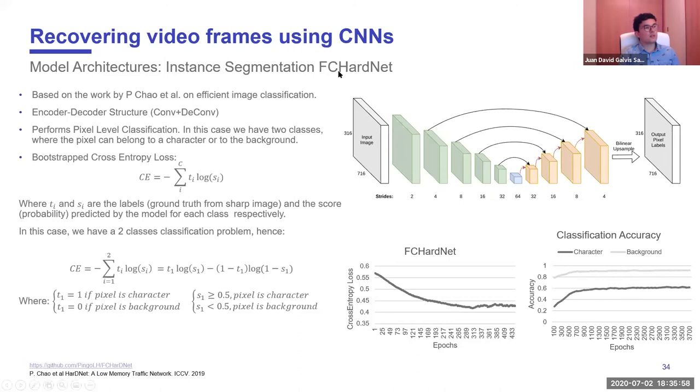Some particularities about this model are that it uses residual connections, which is something really important in most of these type of models to allow us to train these big models without having the gradient die in the back propagation process, which is a particularity of these large models. So these residual connections are really important. The second model that we tried is called FC-HardNet, and it's based on the work by Chao on efficient image classification. It basically has an encoder-decoder structure. This means we take the image and pass it through a series of convolutions that reduce the dimensionality until we have a feature map which is way smaller than the image and that summarizes the important information about the image, which in this case is the pixels that are text for us.